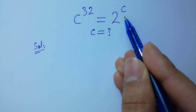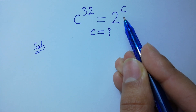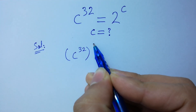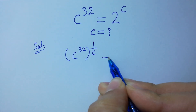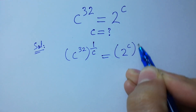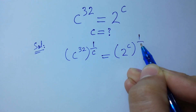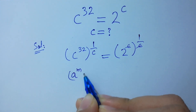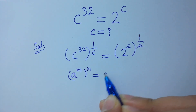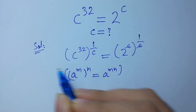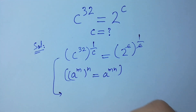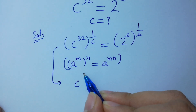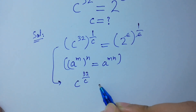To get rid of this C, take power 1 over C on both sides. Since C to the power 32, to the whole power 1 over C, equals 2 to the power C to the whole power 1 over C. C and C will be cancelled. Since A to the power M to the whole power N equals A to the power MN, so we have C to the power 32 times 1 over C, which gives 32 over C, equal to 2.